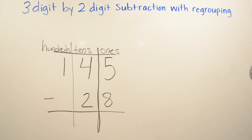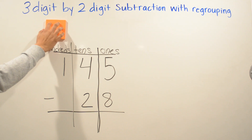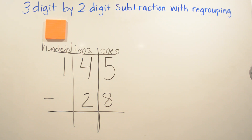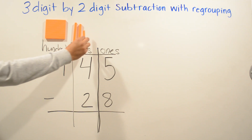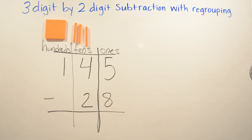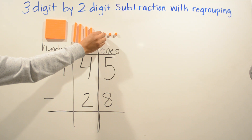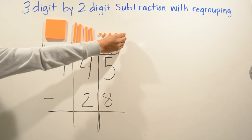We're going to go ahead and put — we have one hundred, and we're going to put four tens: one, two, three, four. And we have five ones: one, two, three, four, five.